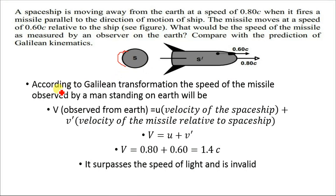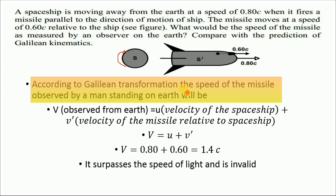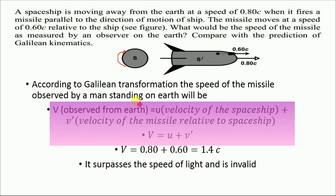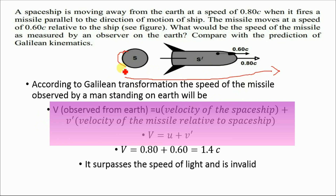The Galilean transformation is simple. According to Galilean transformation, the speed of the missile observed by a man standing on Earth will be equal to v = u + v′, where u is the velocity of the spaceship and v′ is the velocity of the missile relative to the spaceship. We are dealing with this problem in one dimension along the x-axis, so our numerical involves only the x-dimension.